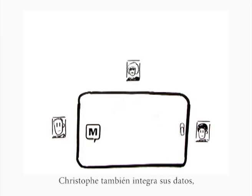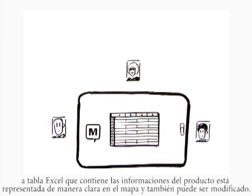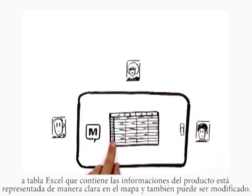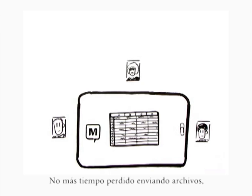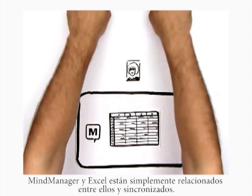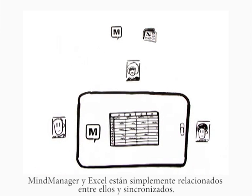Chris also enters his data immediately. The Excel table that contains the product data is displayed clearly in the map, and can also be edited here. This means that files no longer need to be moved around — Excel and MindManager are simply linked together and synchronized.